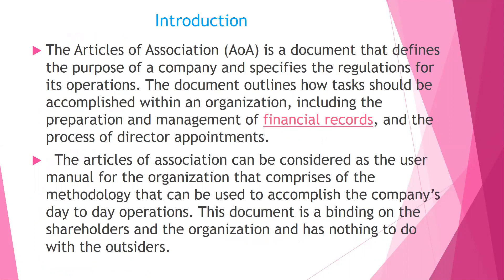Let's begin with the introductory aspect of Articles of Association. Every business needs to be governed and controlled, therefore every business unit or institution must have its own rules and regulations for efficient management of its affairs. In case of a public limited company, it is the Articles of Association that serves this purpose. The Articles of Association are the internal regulations of a company on the basis of which its internal matters are managed. They lay down the powers of the directors, shareholders, and officers. It is a document that defines the purpose of a company and specifies the regulations for its operations, outlining how tasks should be accomplished.